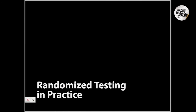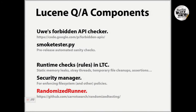So that was the theory, now the practice. If you take a look at Lucene, there are a number of quality assurance components, some divided between static checks and runtime checks. Static checks Uwe will be talking about, so I'll skip these. For runtime checks, we have a number of rules in Lucene test case that are really interesting. If you haven't seen a really complex JUnit system, Lucene test case is the class to take a look at — there are rules for detecting static memory leaks, stray threads, temporary file cleanups, et cetera.